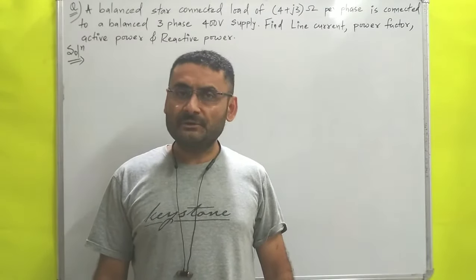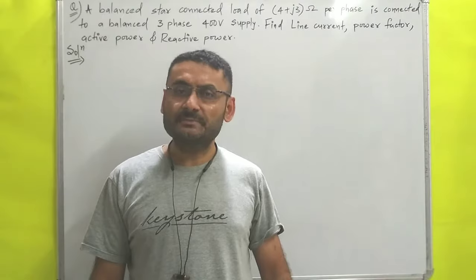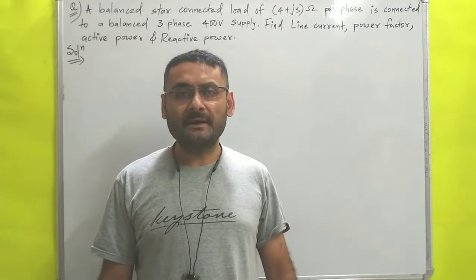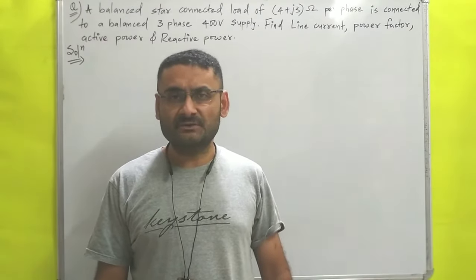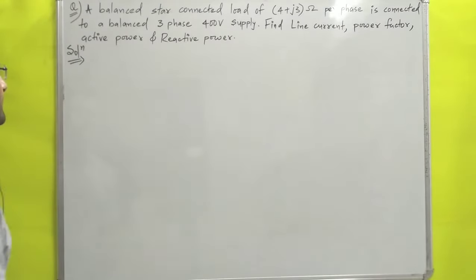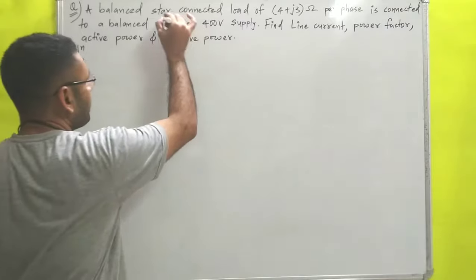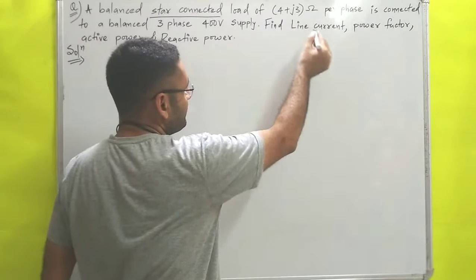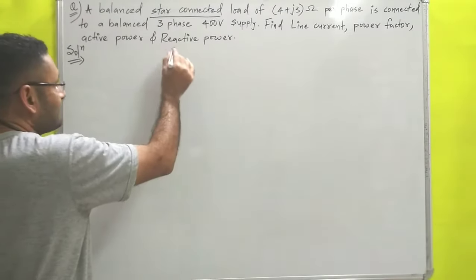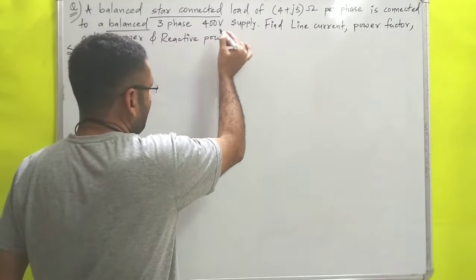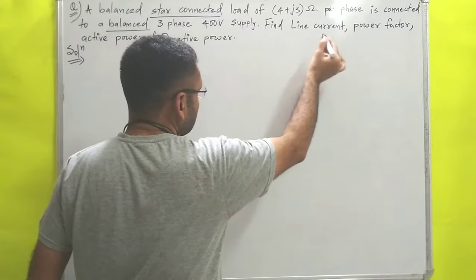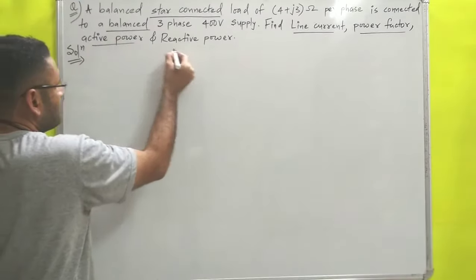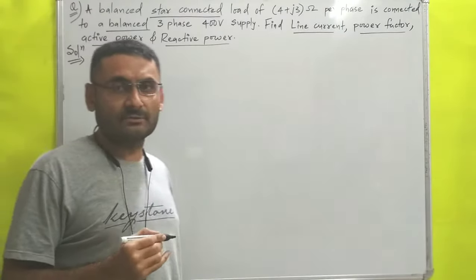Hello students, today we are going to calculate an important numerical based on three-phase star connection. A balanced star-connected load of 4+j3 ohms per phase is connected to a balanced three-phase 400-volt supply. We need to find: (1) line current, (2) power factor, (3) active power, and (4) reactive power.